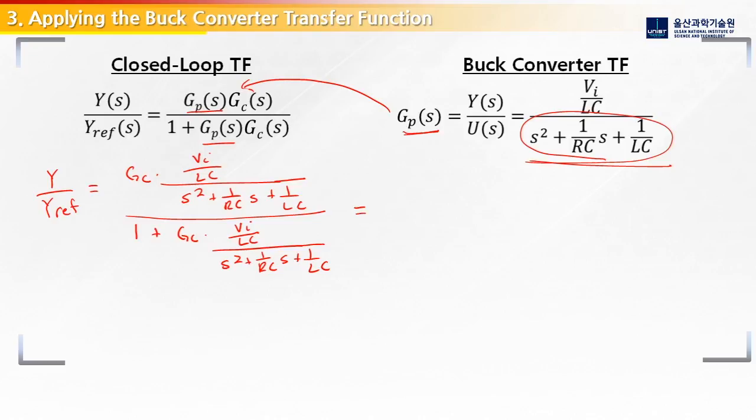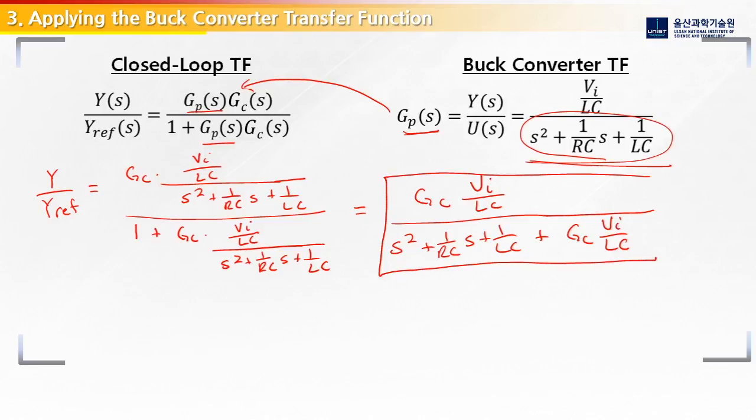So we'll multiply those both out. We will get Gc and then just Vi over LC in the numerator. And then 1 becomes multiplied by S squared plus 1 over RC, S plus 1 over LC, and then we add Gc Vi over LC. So this is our final transfer function for our system. We can see that it will have at least two poles because of the order here. But we need the transfer function of the controller, the Gc, before we can actually calculate the poles.